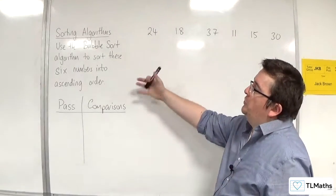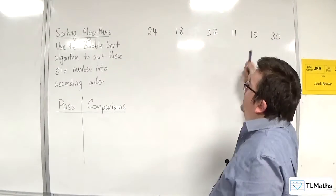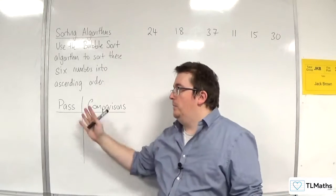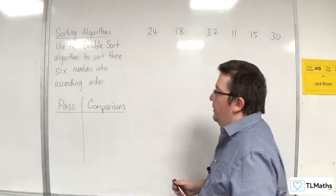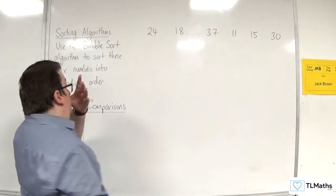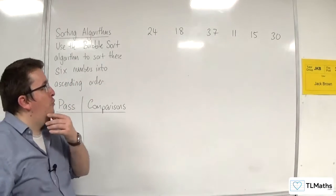So we're going to use the bubble sort algorithm to sort these six numbers into ascending order, and I'm going to track the number of comparisons each pass as I go. So how does the bubble sort algorithm work?